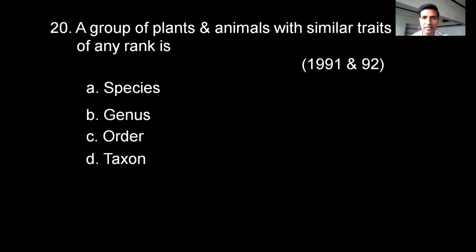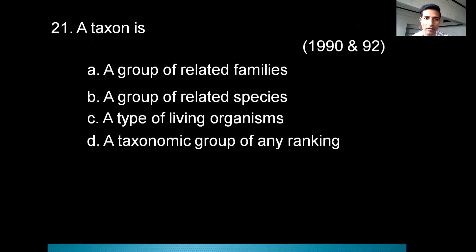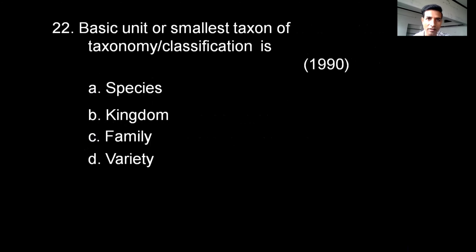A group of plants and animals with similar traits of any rank is called — options are species, genus, order, or taxon. The correct answer is taxon, as it refers to any rank in the taxonomic hierarchy. Another question: A taxon is a taxonomic group of any ranking — the correct option is D.